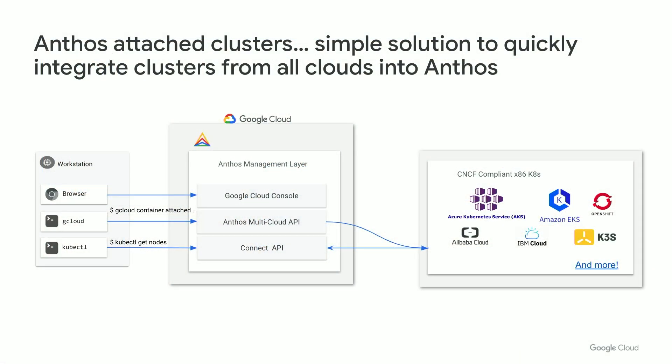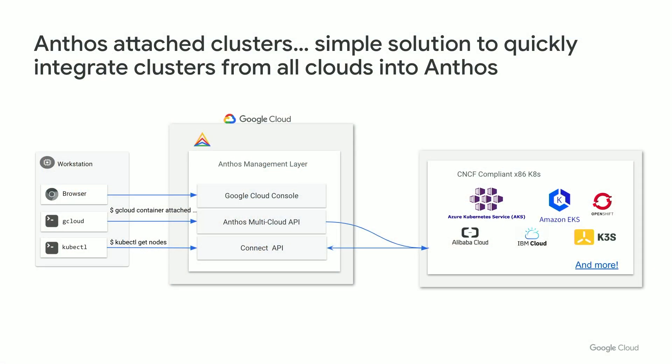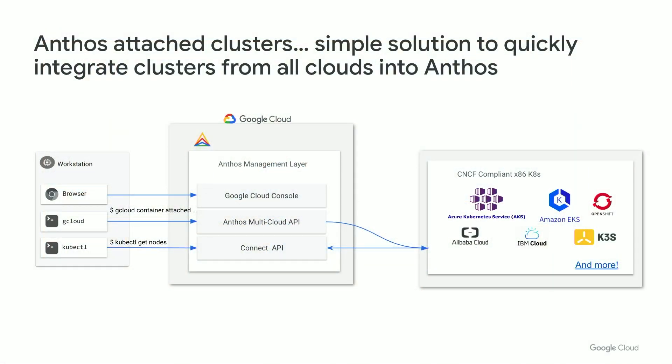Next is attached clusters. If you already have Kubernetes deployed in other clouds or other environments using other Kubernetes orchestration or platforms, and you want to bring the same consistency and same Anthos solutions to those clusters, a simple way is to attach those clusters into Anthos — what we call attached clusters. Once you attach them into Anthos, which takes a few minutes, you can apply the same policies, bring the same observability, and also bring the same fleet-like capabilities to all those clusters. It's a fantastic way to get started sooner and deliver value sooner to your dev teams.